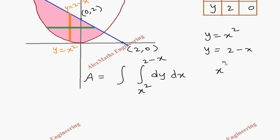So this becomes x² = 2 - x. Bringing everything to one side: x² + x - 2 = 0. On factorizing, we get (x + 2)(x - 1) = 0. It means the value of x is -2 and 1.